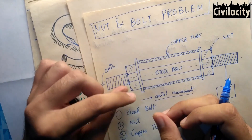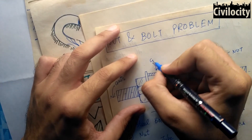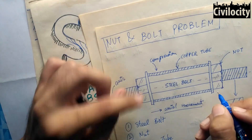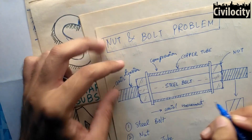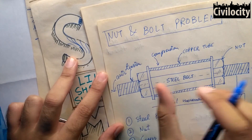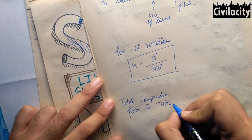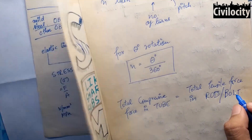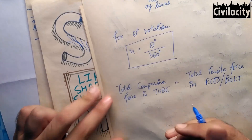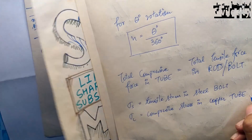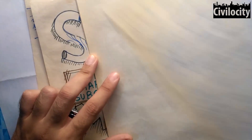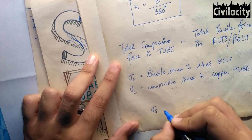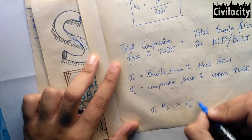When we rotate the nut, the copper tube gets compressed and the steel bolt comes into tension. Tightening the nut applies compressive forces on the copper tube while pulling the steel bolt outward, producing tensile forces in it. Since no external force is acting here, the compressive force produced in the copper tube will be equal to the tensile force in the steel bolt. So: sigma_s times As equals sigma_c times Ac, where sigma_s and sigma_c are stresses and As and Ac are areas of the steel bolt and copper tube respectively.